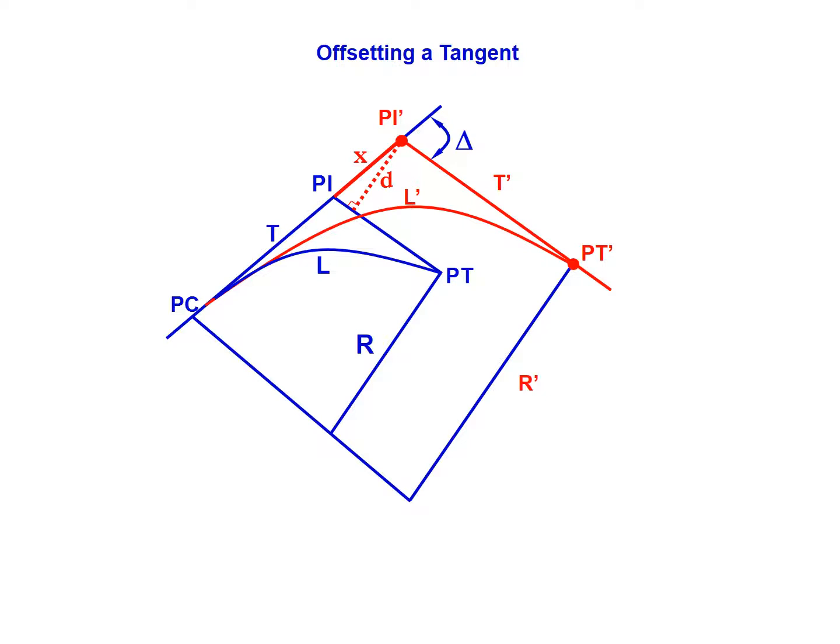To carry out this function of offsetting a tangent, nomenclature adds prime to all the new components. So L prime represents the new length, T prime is the new tangent length, PI prime and PT prime are the new PI and PT respectively, and R prime is the new radius.